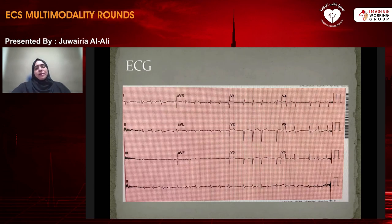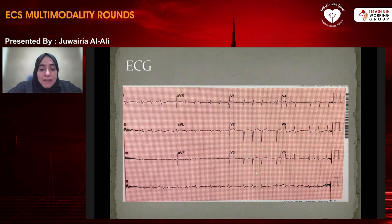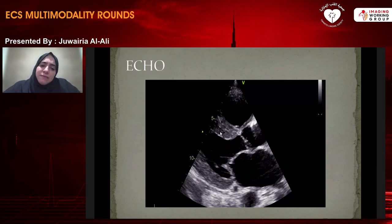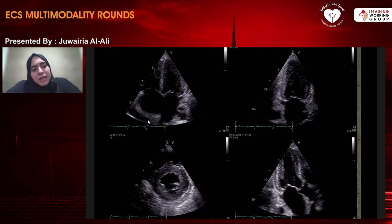His ECG showed low voltages throughout, pseudo-Q waves anteriorly, and he was in atrial fibrillation. His echo showed thickened LV walls with a bright appearance, and even the valves were a little bit thickened. He had a normal ejection fraction but all walls are thickened. The papillary muscles were also a little bit thickened. There was left atrial enlargement, right atrial enlargement, and a pericardial effusion.